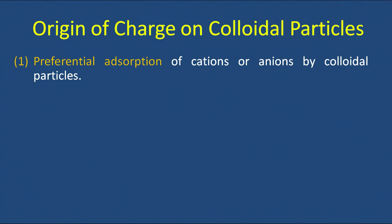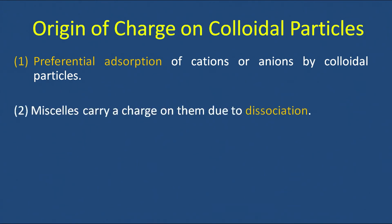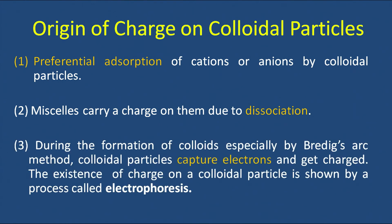The charge on colloidal particles originates in several ways. Preferential adsorption of cations or anions by the colloidal particle is one source — as seen with ferric hydroxide, where ferric ions are preferentially adsorbed on the particle surface. In associated colloids like micelles (e.g., soap), charge arises from dissociation — micelles are formed by anions. Lastly, during formation of colloids by Bredig's arc method, colloidal particles capture electrons and become charged.